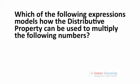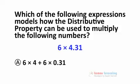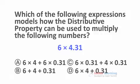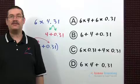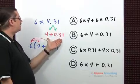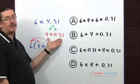Which of the following expressions models how the distributive property can be used to multiply the following numbers? To answer this question, the first thing I'm going to do is decompose 4.31 into the sum 4 plus 0.31.